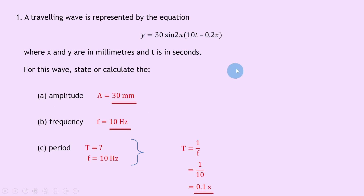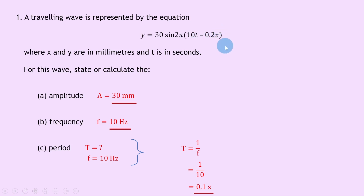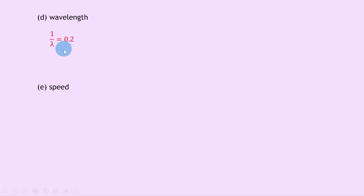For part d, we have to state or calculate the wavelength. Looking back at our travelling wave equation, inside the brackets it's ft minus x over lambda. So 0.2 will help us find lambda, because if this is minus x divided by lambda, then 1 over lambda equals 0.2. So if we want to find lambda, we swap these two around: lambda equals 1 divided by 0.2, which gives 5 millimetres for the wavelength.